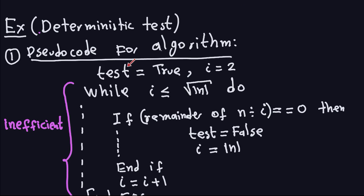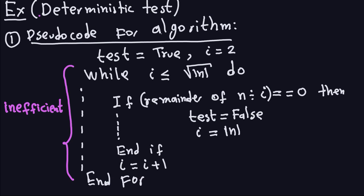In the pseudocode, the variable 'test' is a boolean initialized to true. If this variable stays true throughout, it means the number n we are testing is prime. If 'test' becomes false, then n is not prime. We set i equal to 2 — these are the candidate divisors we will try against n.